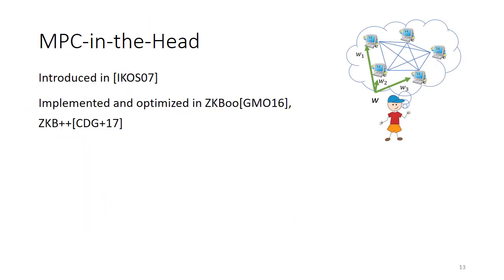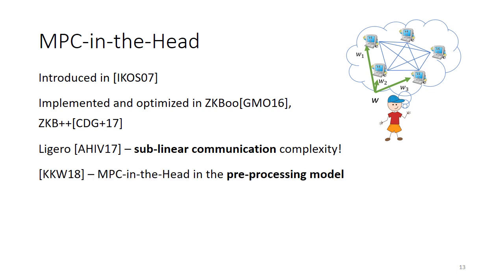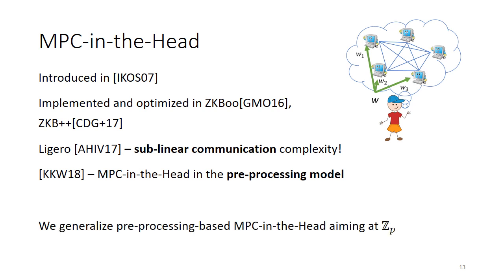MPC in the head has been around since the seminal work of Ishai et al. in 2007. The first practical implementation was provided in the ZKB protocol and the ZKB++ work that followed. The Ligero protocol showed how to instantiate the MPC in the head paradigm with sublinear communication complexity, which is asymptotically less than our solution. In 2018, the KKW protocol showed how to combine MPC in the head with the preprocessing paradigm, which has been very popular in MPC. In comparison, we generalize this preprocessing-based MPC in the head and show how to use it more specifically for protocols that run over large prime fields.